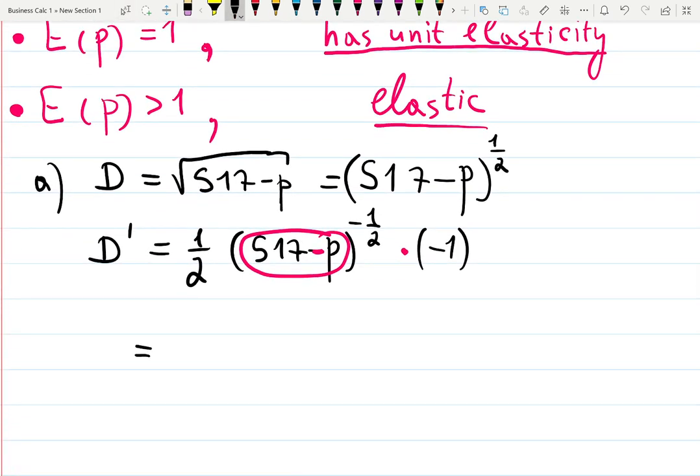We can rewrite all of this as negative 1 over 2√(517 - p).